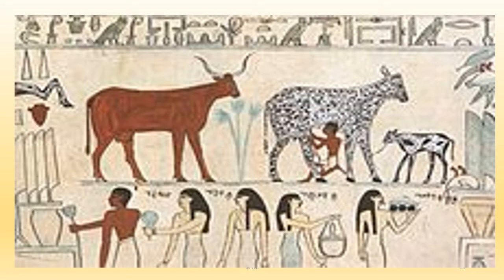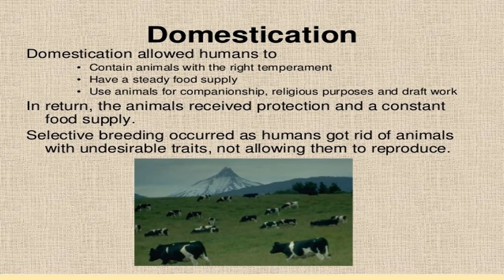Even Egyptians depicted different types of cows. Domestication allowed humans to contain these animals and have a steady food supply. They used animals for companionship, religious purposes and even work. In return, it is a mutual relationship — the animals received protection and a constant food supply.